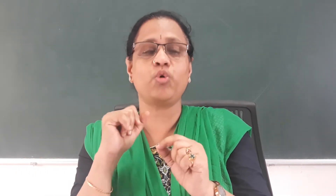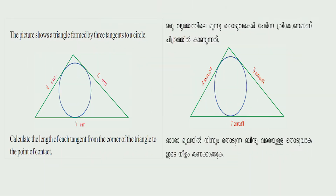Hi students! Today we are continuing the chapter called Tangents. In the last class, we asked about tangents from an external point. There are two tangents from an external point, and we proved that those two tangents are equal. We did the second question on page number 179.